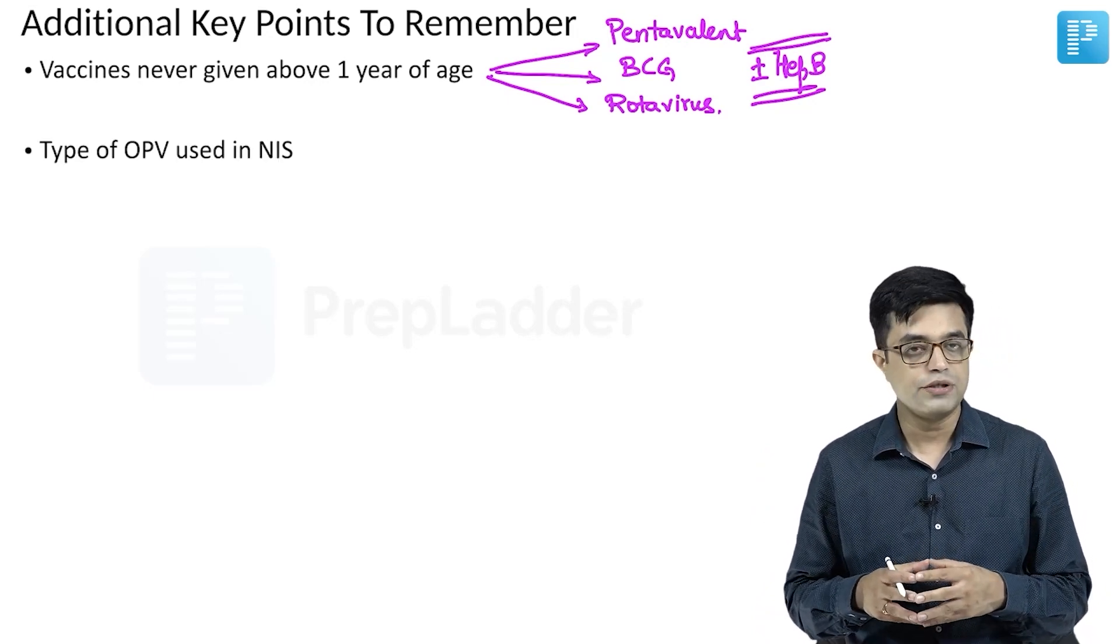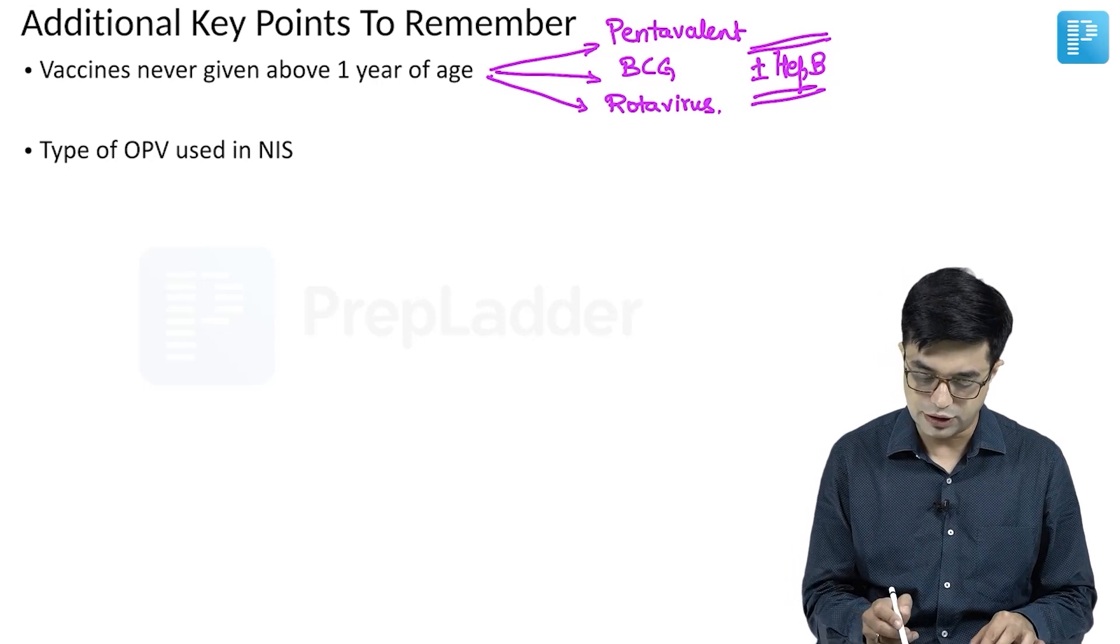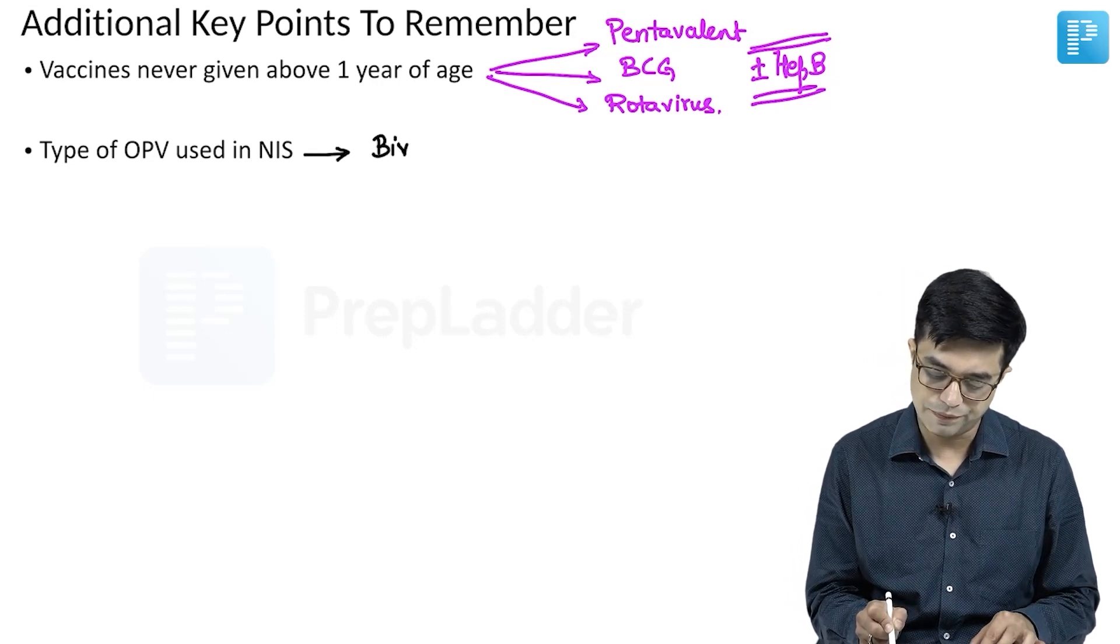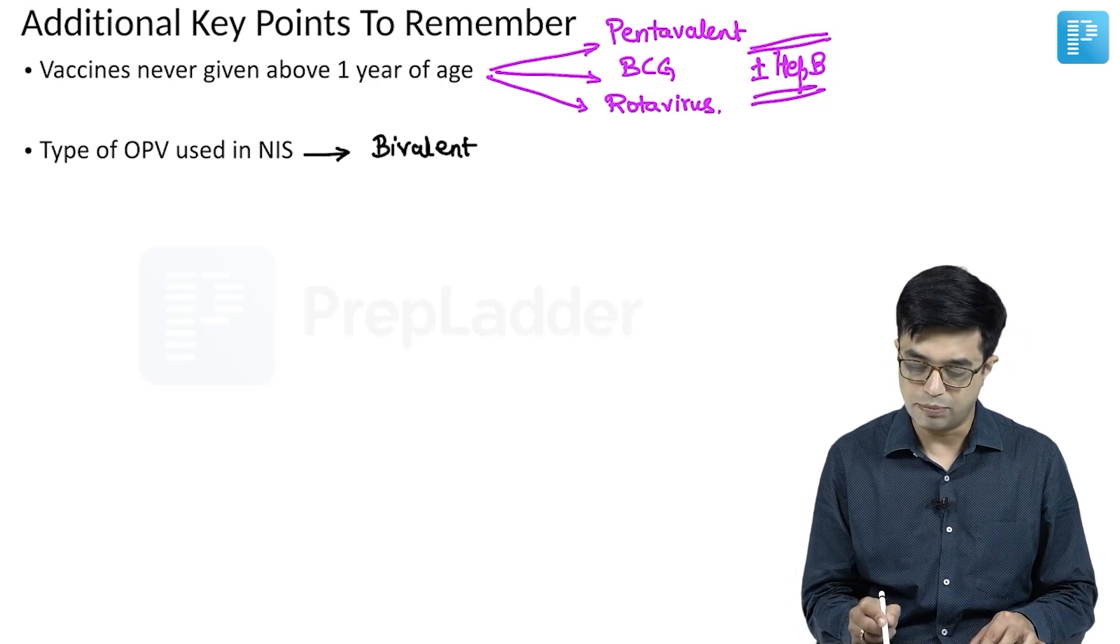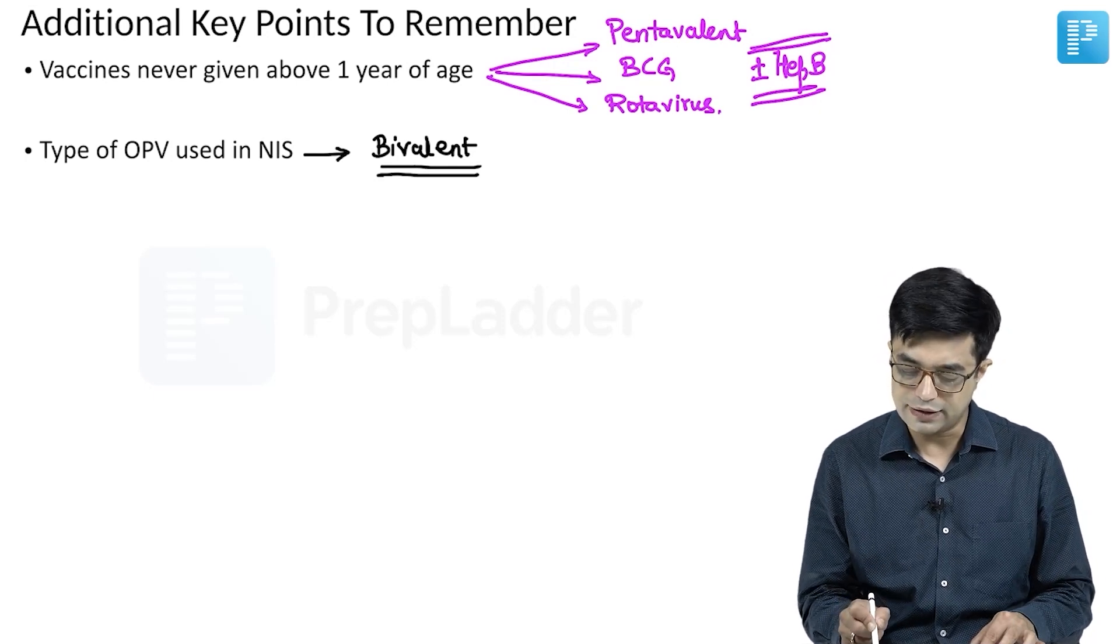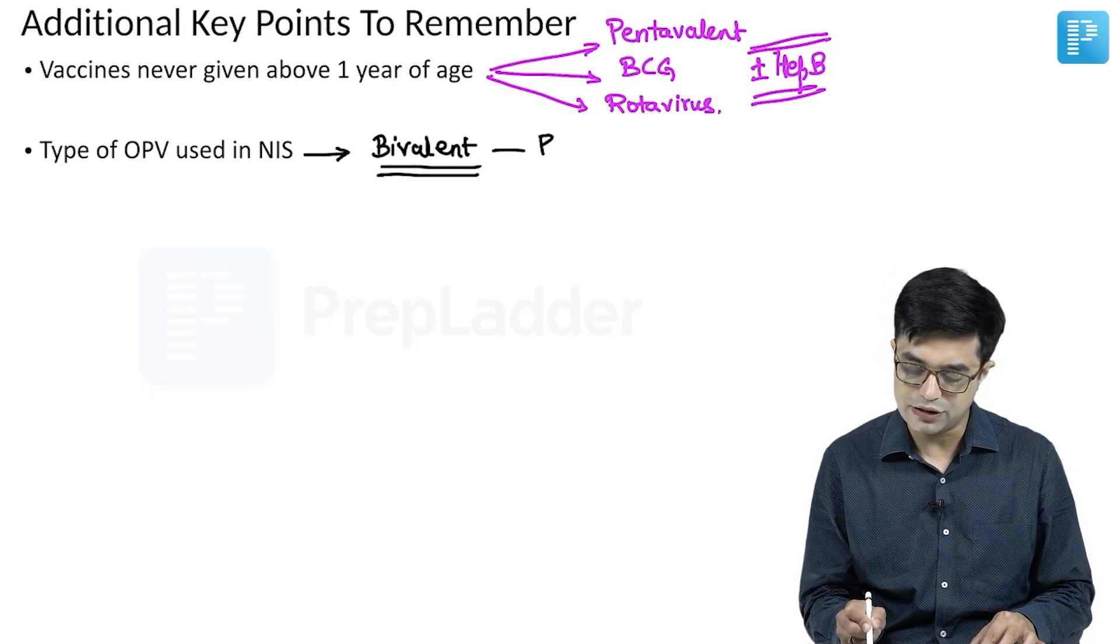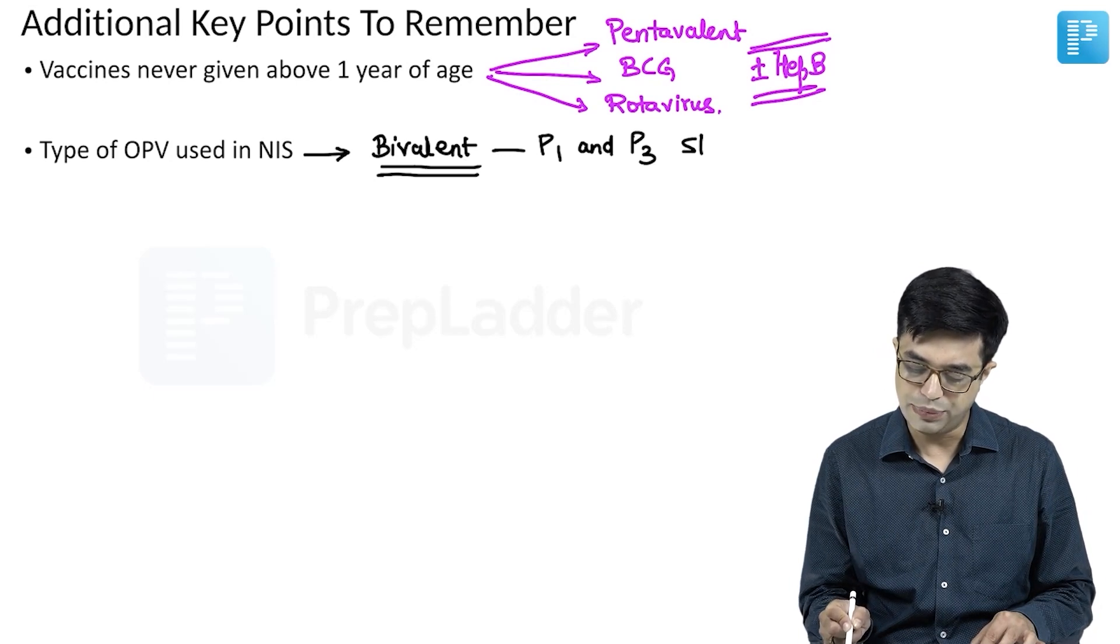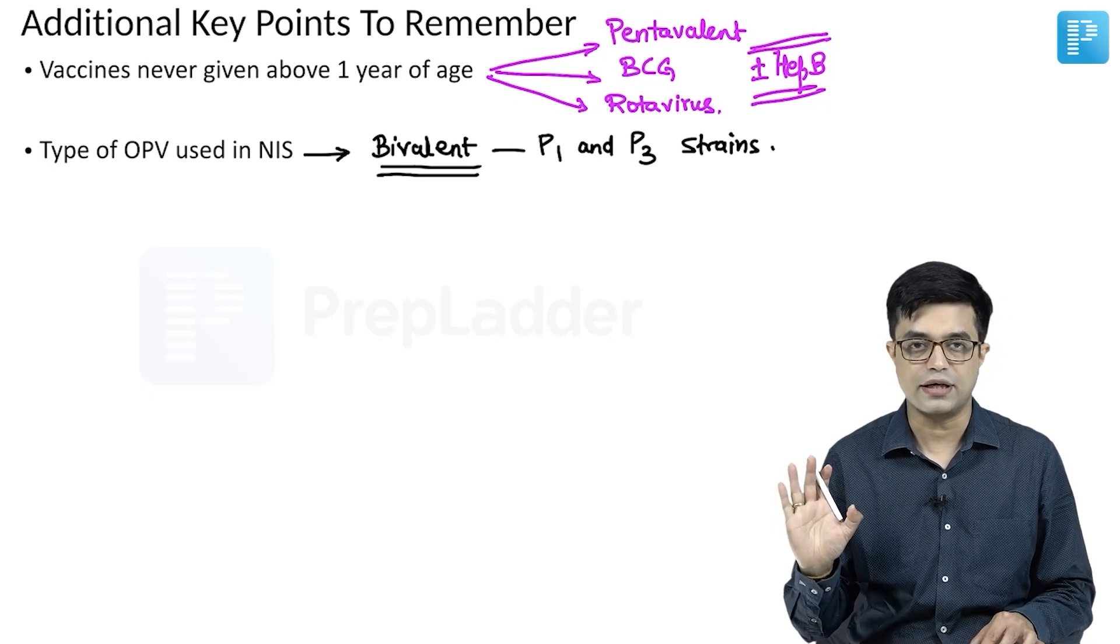What is the type of OPV used in the national immunization schedule? The type of OPV used in NIS is bivalent form. Earlier it used to be trivalent OPV. Bivalent OPV has been introduced since 2017 and the bivalent form will be active against P1 and P3 strains. The P2 has been abandoned.